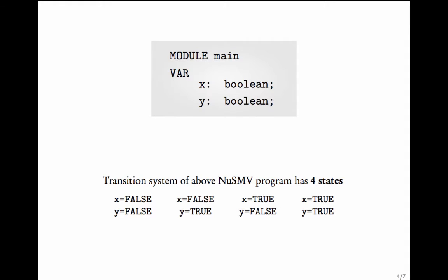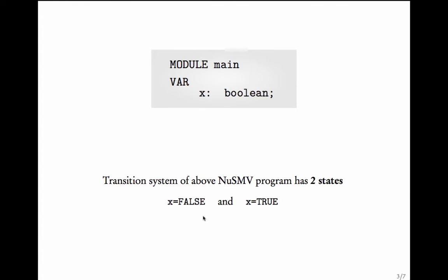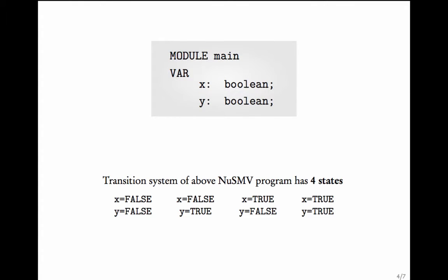There will be four states: x equals false, y false; x equals false, y true; x equals true, y false; and x equals true, y true. So for every state here, you have two states. The number of states gets doubled when you add a boolean variable.